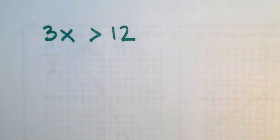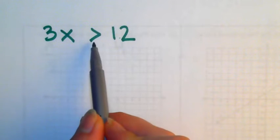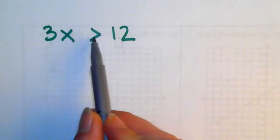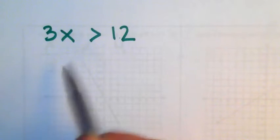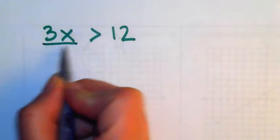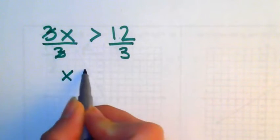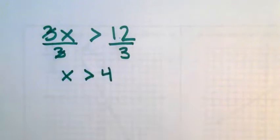So let's just look at these multiplication ones. Again, just like an equation except you have an inequality sign. So 3 times some number is greater than 12. I am going to undo that multiplication with the inverse, divide, got to do it to both sides. x is greater than 4.